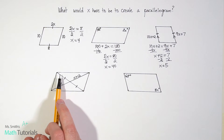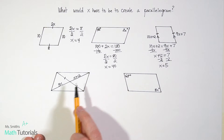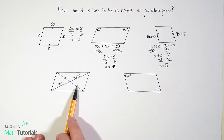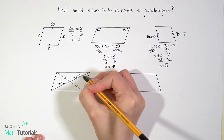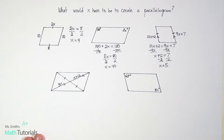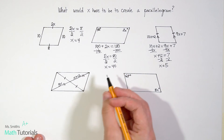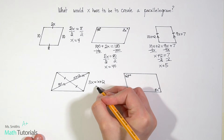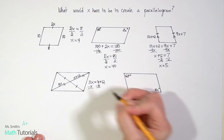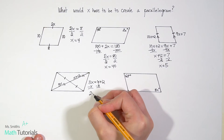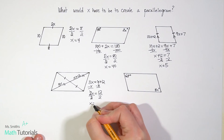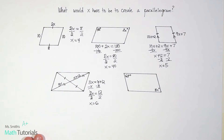For this one, we've got a diagonal situation. If this was a true parallelogram, those diagonals have to bisect each other, so this side would have to be congruent to that side. We would say 3x equals x plus 12. Subtract x from both sides: 3x minus 1x is 2x equals 12. Divide by 2 to get x alone, and x equals 12 divided by 2, which is 6. So in order to create a parallelogram here, x would have to be 6.